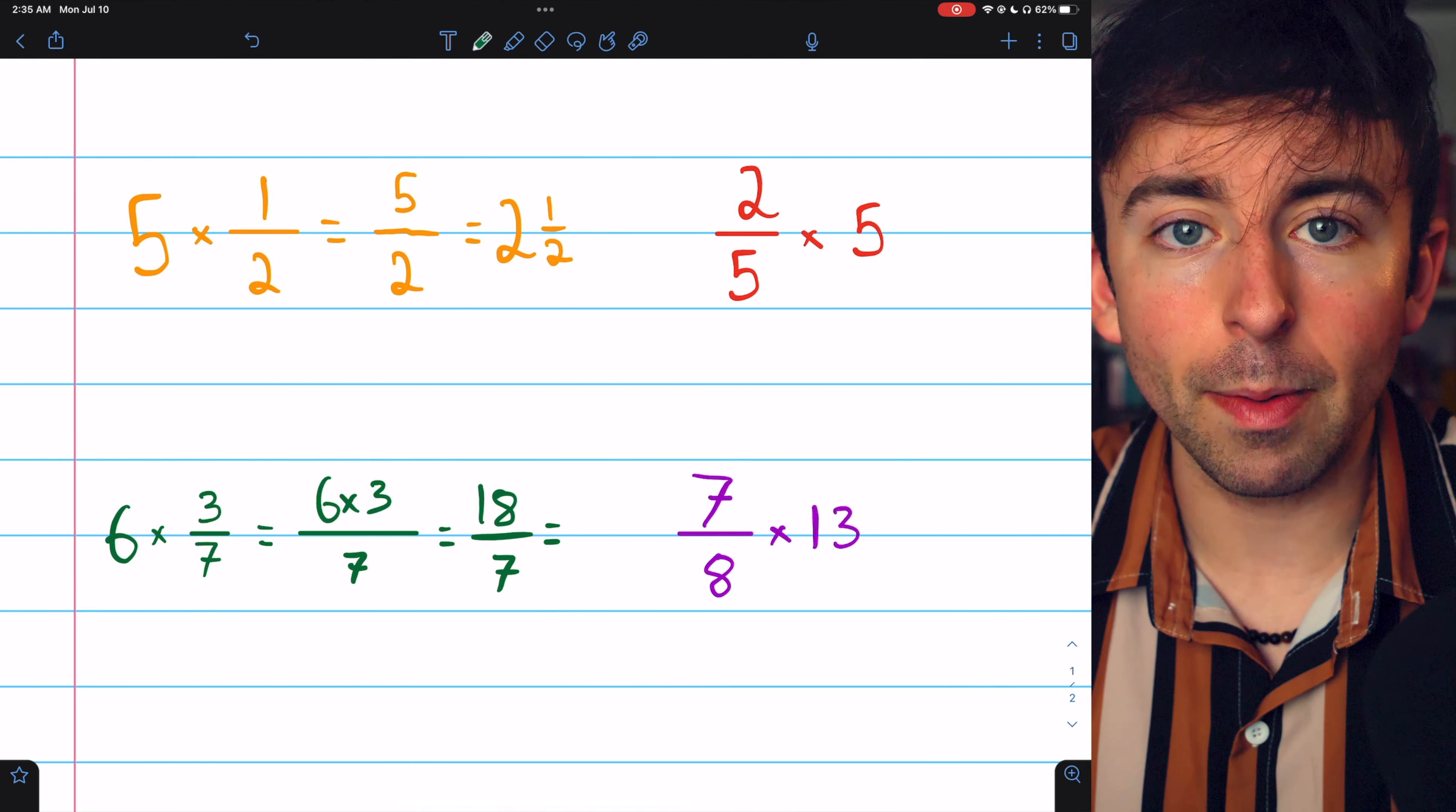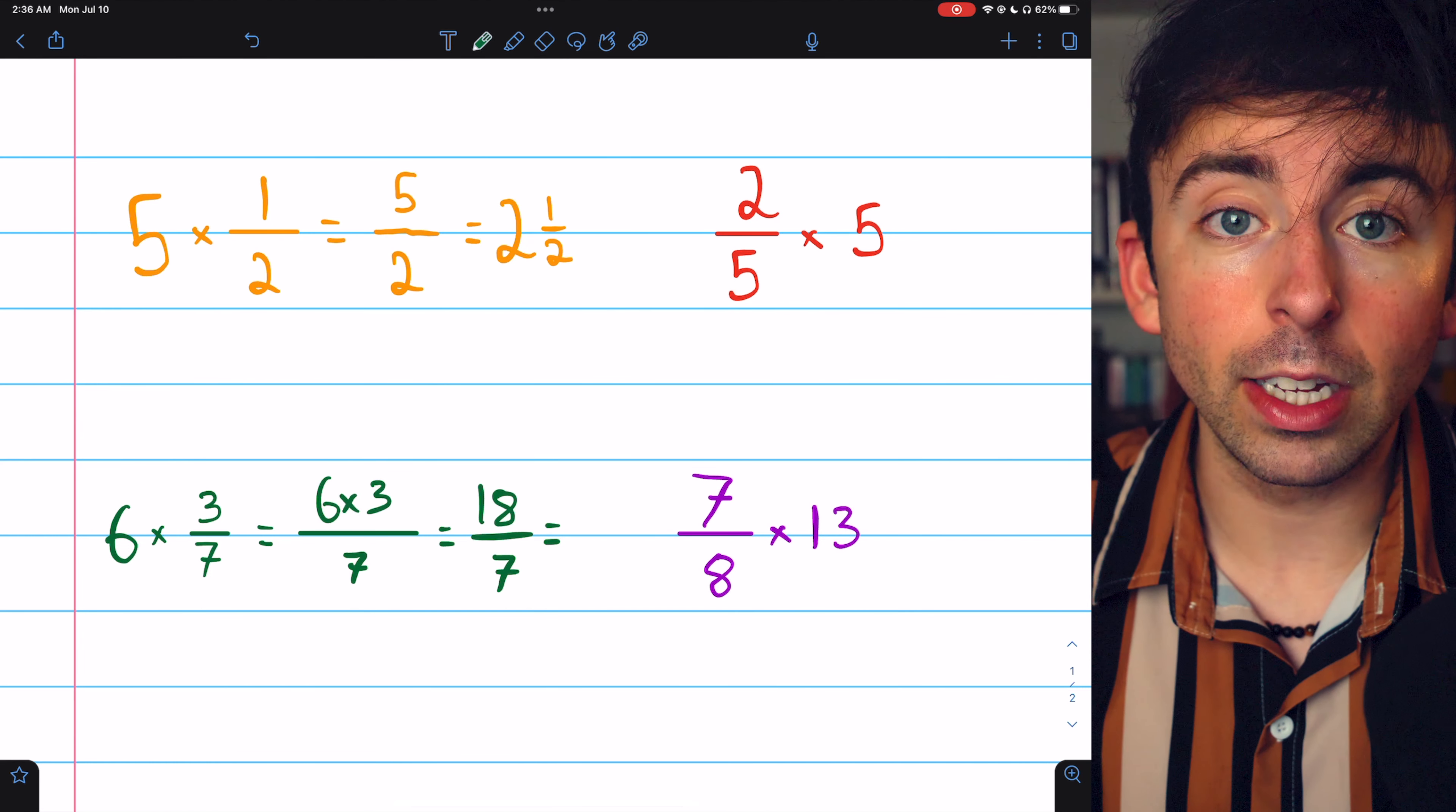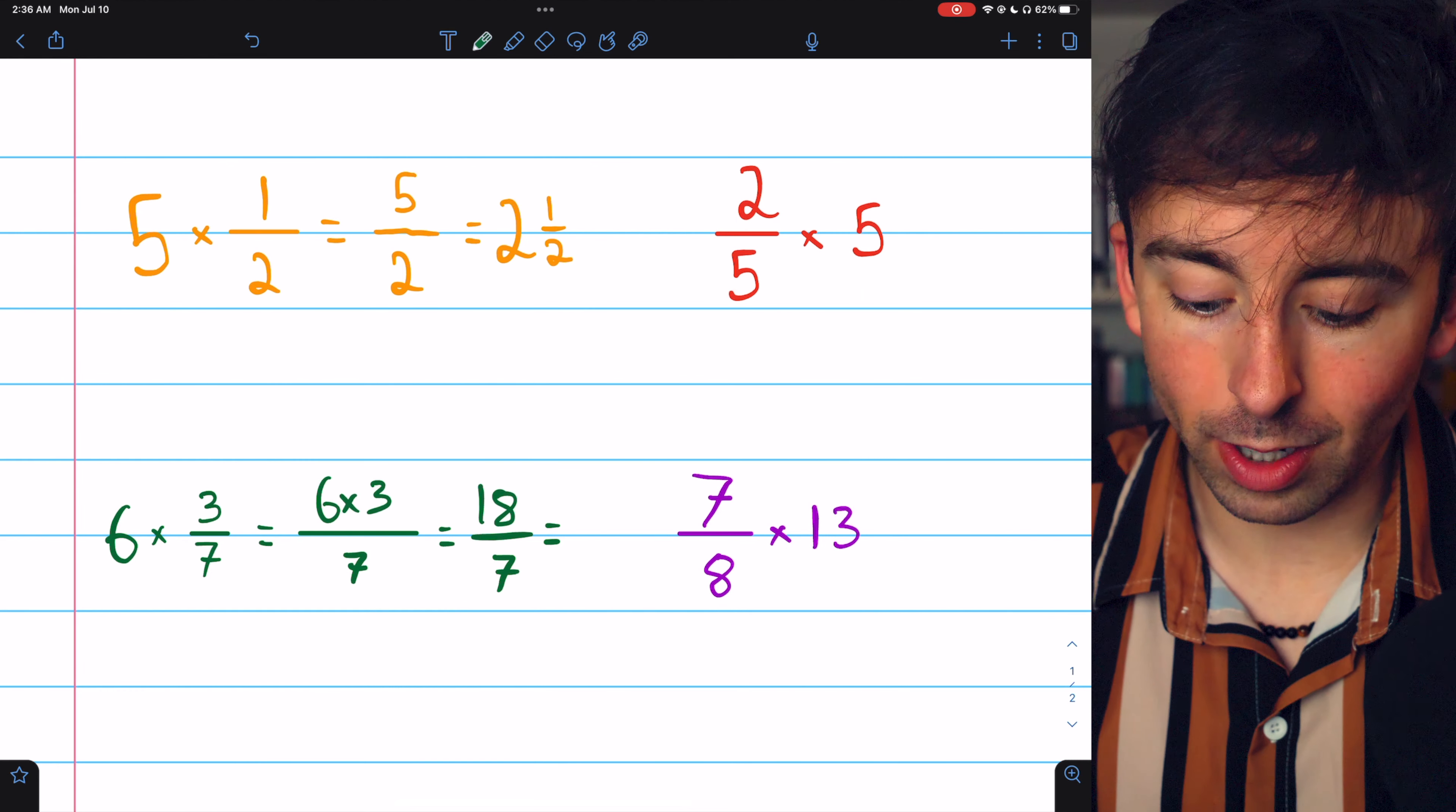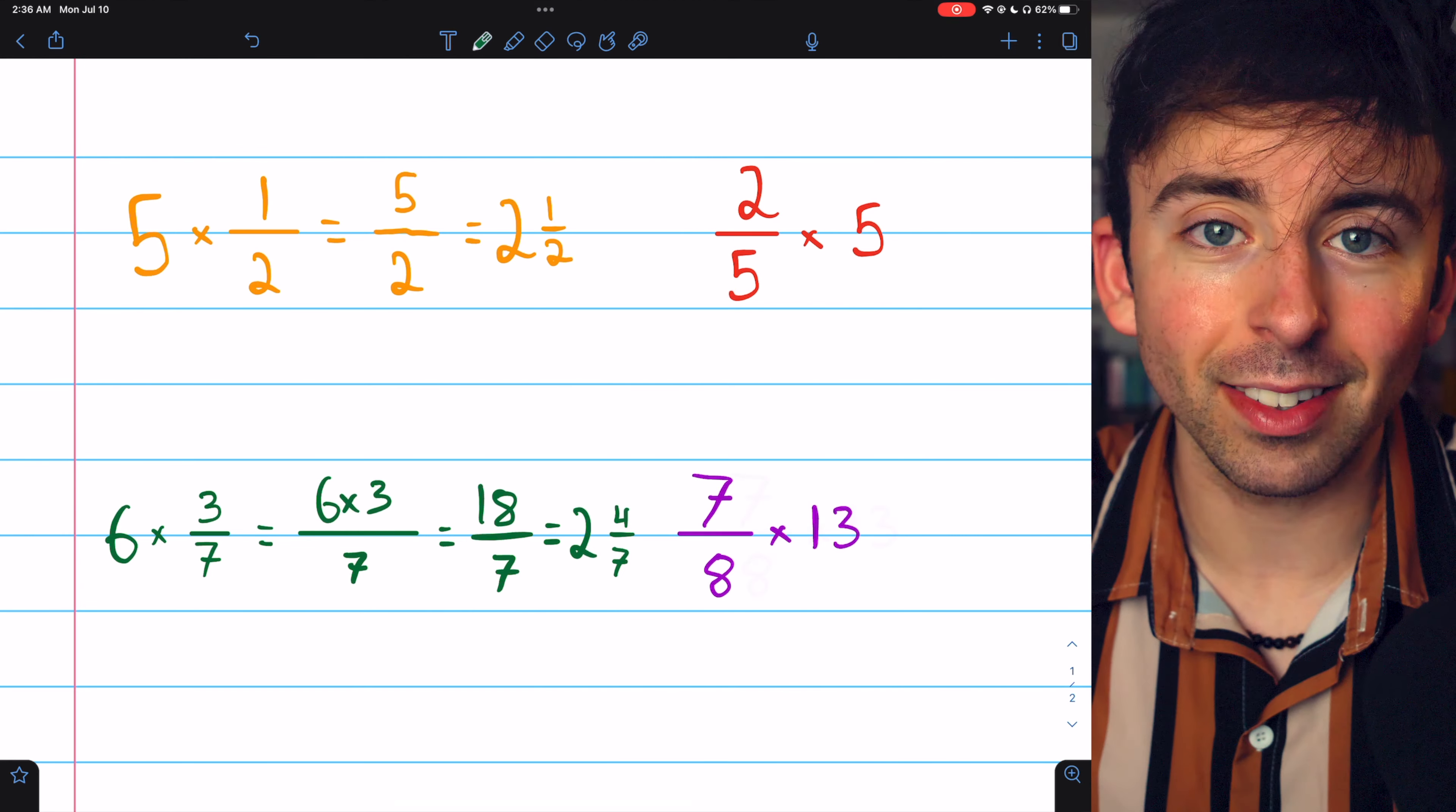If we want to write this as a mixed number, we ask how many times does 7 go into 18? The answer is twice. It goes into 14, and that leaves 4 left over. So 2 and 4 sevenths would be our answer as a mixed number.